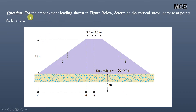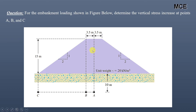I have been given a question which states that for the embankment loading shown in the figure below, we have to determine the vertical stress increase at points A, B, and C. The embankment has a unit weight of 20 kN/m³, a top width of 3.7 meters, a height of 15 meters,